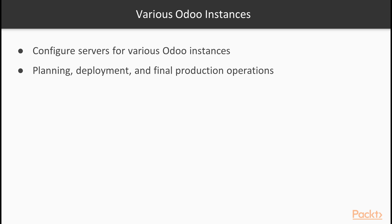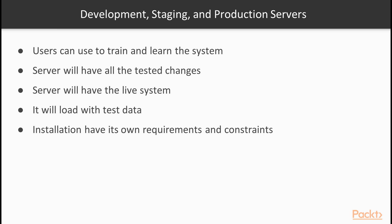One of the first considerations you will need to make when contemplating an Odoo installation is how you will configure servers for various Odoo instances that may be required during planning, deployment and final production operations. In addition to a development server and production server, it is often desirable to have an Odoo installation that users can use to train and learn the operations of the system — sometimes known as the staging server.